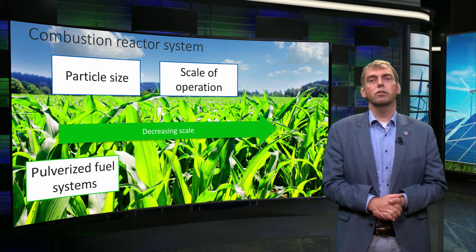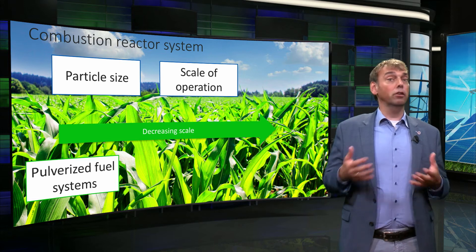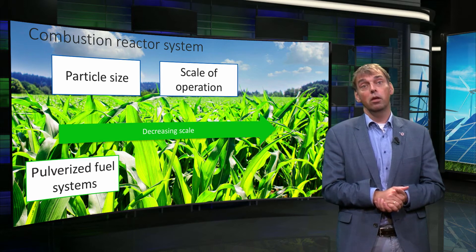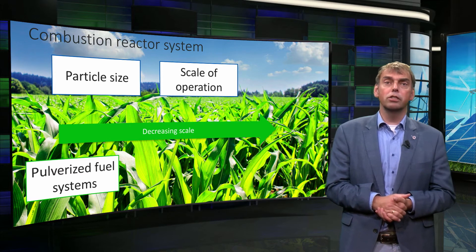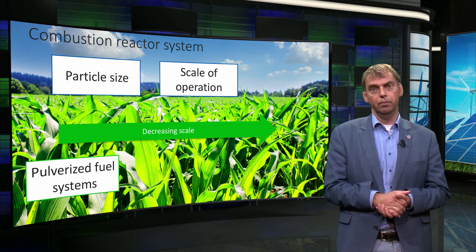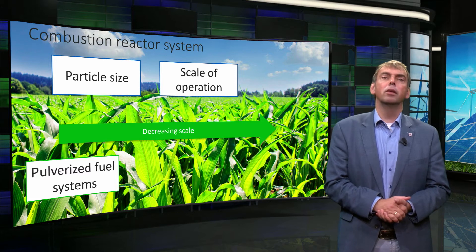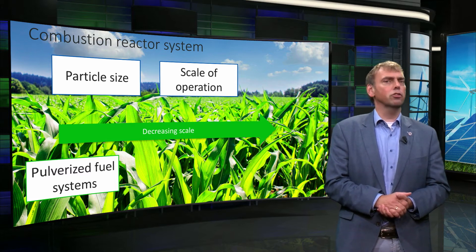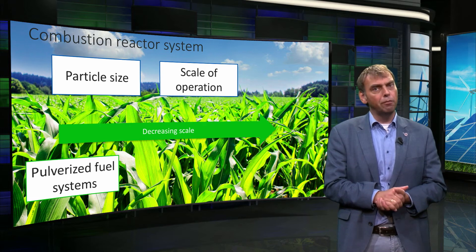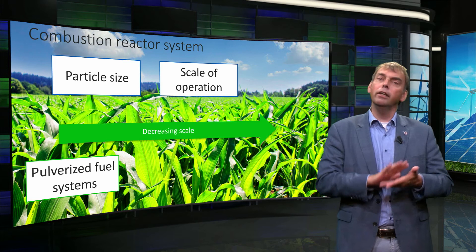In this regime of high temperatures and low residence times, the particle size requirement is much smaller than 1 mm. For coal combustion, particle sizes of about 50 micrometers are used. Typically, the conversion is governed by external mass transfer of oxygen to the particle. Since temperatures are very high, the reaction rates are also high. Biomass particles are often not easy to grind down to such small sizes, so extensive pretreatment is needed to make the biomass more brittle and easier to mill.